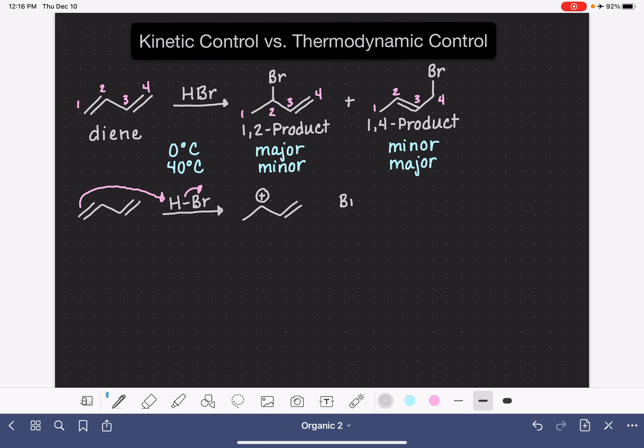The bromide ion then attacks the carbocation and this gives us the 1-2 product. And again, this is the major product.